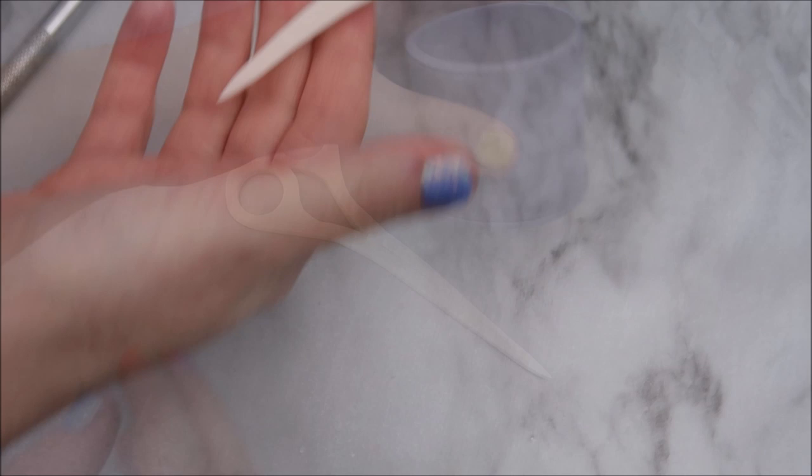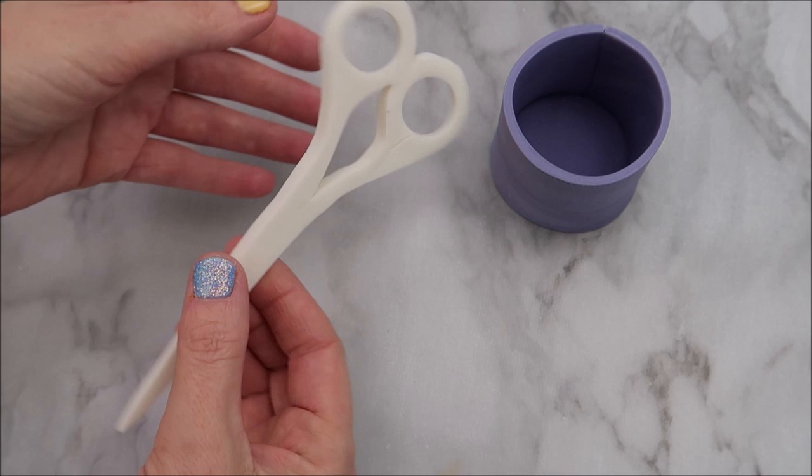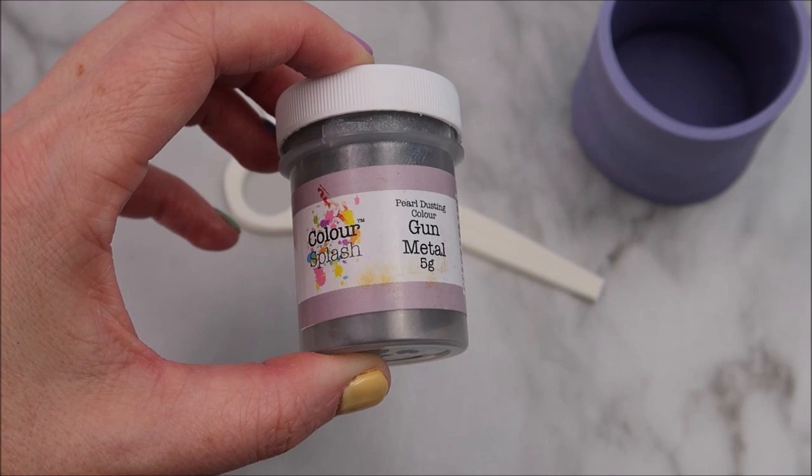Now this is the next morning and as you can see they've dried out really well. So I'm just going to trim the bottom part of these scissors and I'm going to use some edible modelling paste. This is the gun metal shade and I'll put links in the description for all the materials as well.